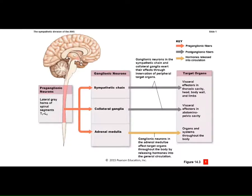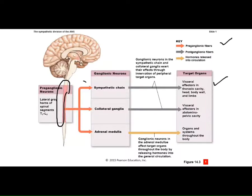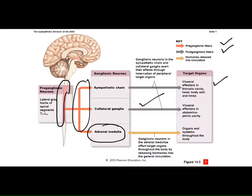In the sympathetic nervous system, the pre-ganglionic fibers are short and the post-ganglionic fibers are long. Signals come from the thoracic and lumbar regions to ganglia that are relatively close to the vertebral column, and then go out to the target. When these signals go to the adrenal medulla, hormones are released into the general circulation, showing a connection between the autonomic nervous system and the endocrine system.